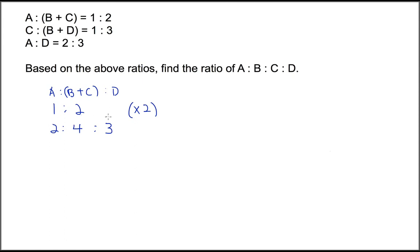Now let's look at this equation just to check. A is to D, 2 is to 3. A is to D is still 2 is to 3. Just that B plus C now has become 4 because we use A is to B plus C times 2. So we have 4 units for B plus C.